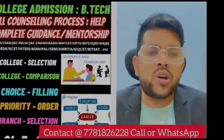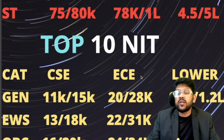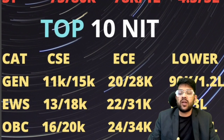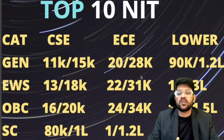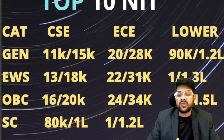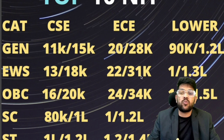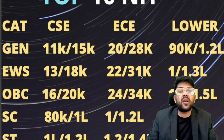For top 10 NIT colleges: General category CSE cutoff is 11,000–15,000. For EWS: 13,000–18,000. For OBC: around 16,000–20,000. For SC: 80,000 to 1 lakh. For ST: 1 lakh to 1.2 lakh. These are for CSE; for EC and lower branches you can check the on-screen data. After the slash, values represent female reservation seats.